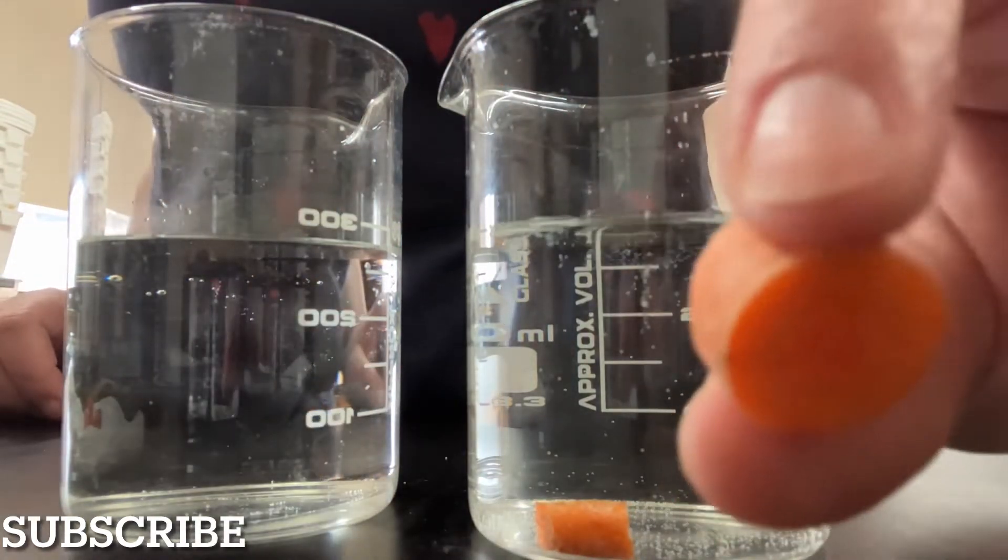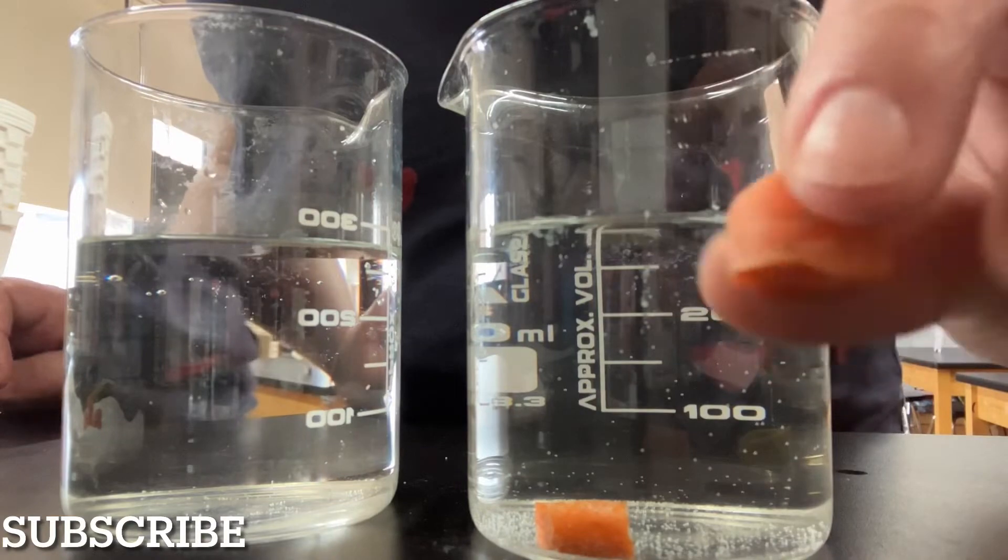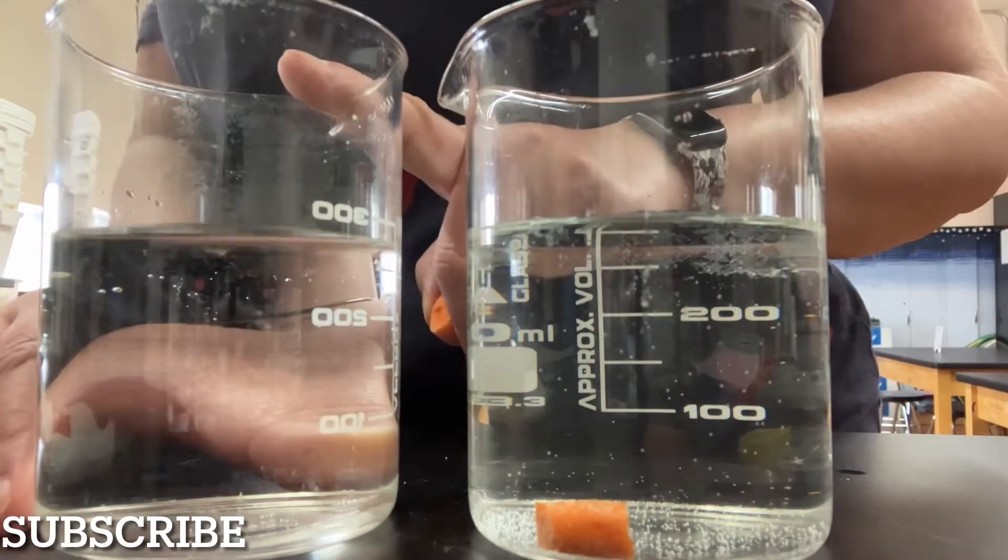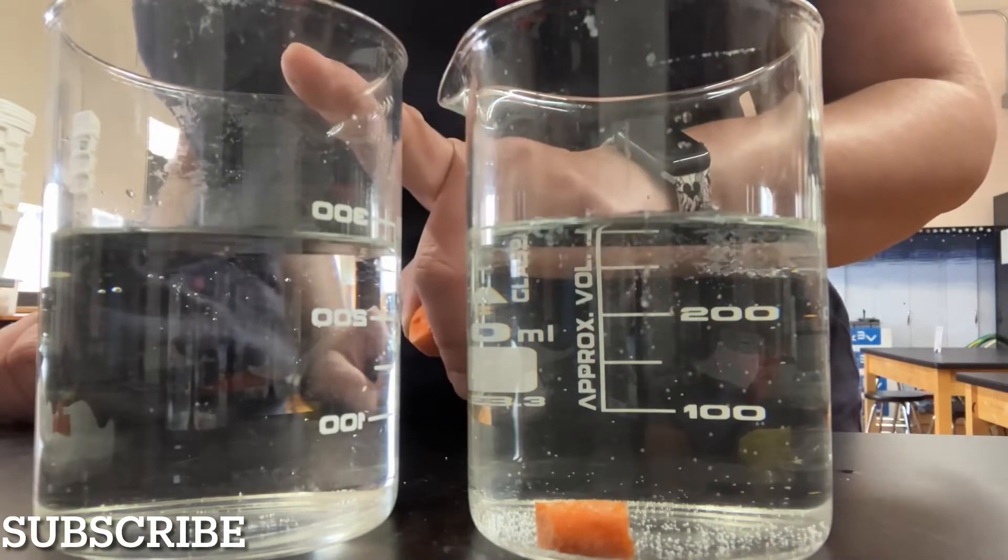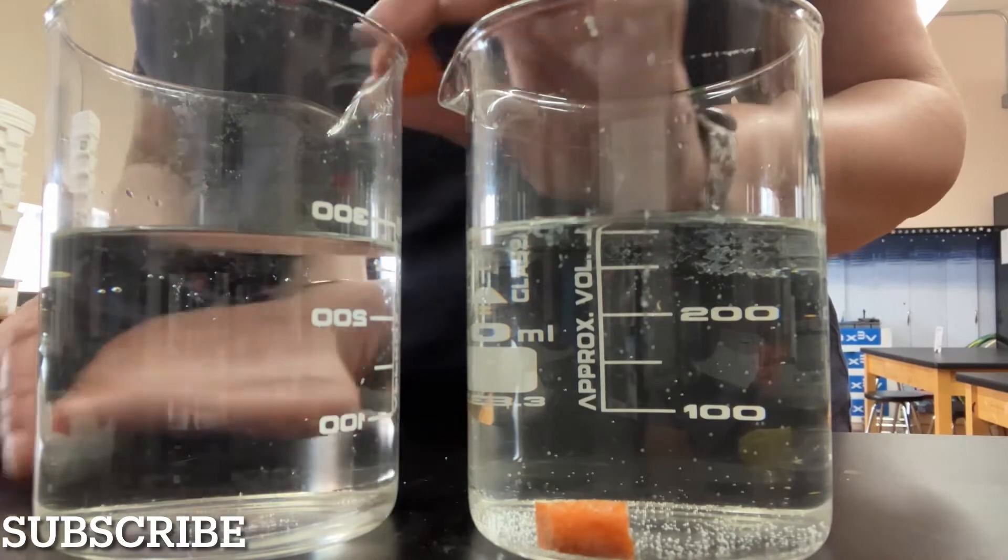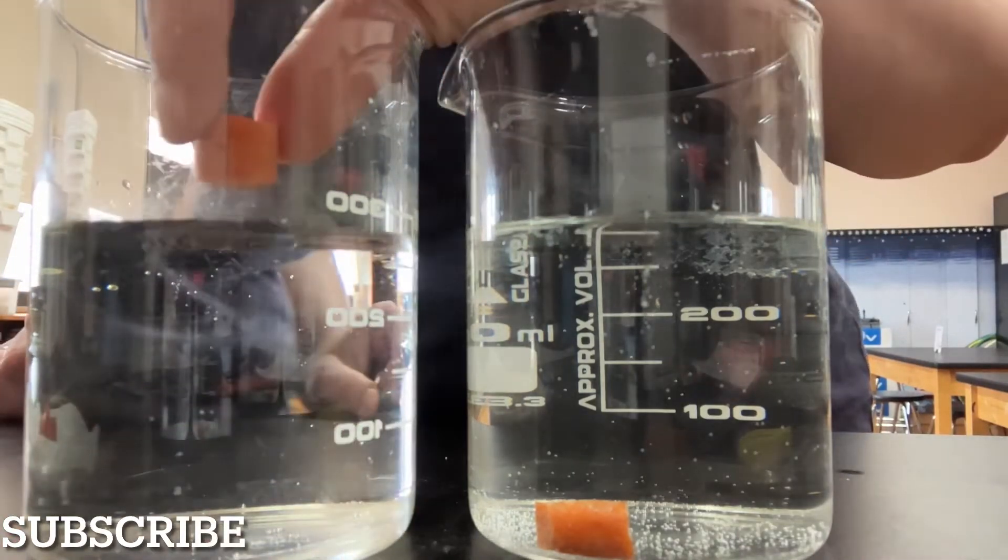So what happens when we place this piece of carrot into this liquid? Now this liquid is hydrogen peroxide. Okay, so do you think it's going to sink or do you think it's going to float? Let's check it out.